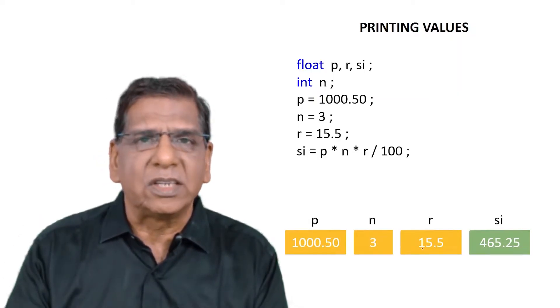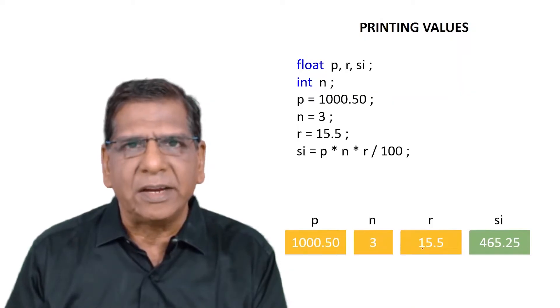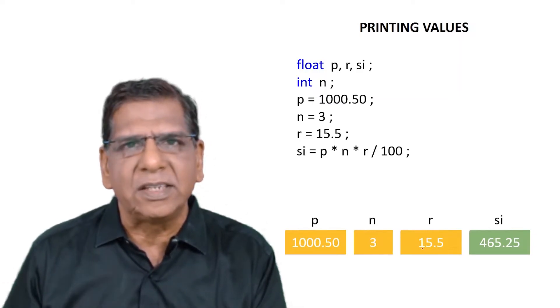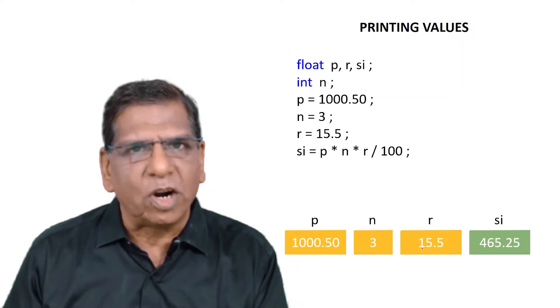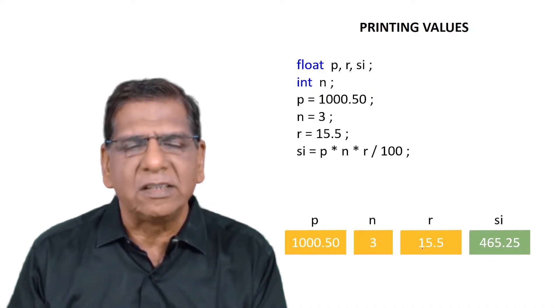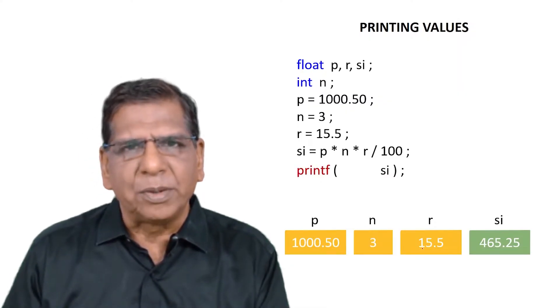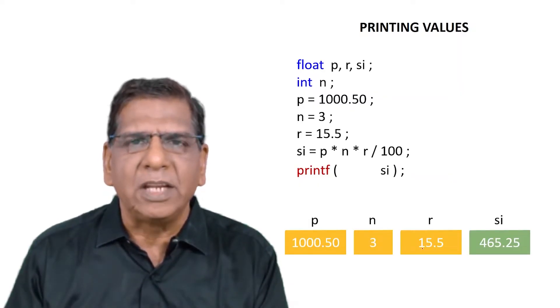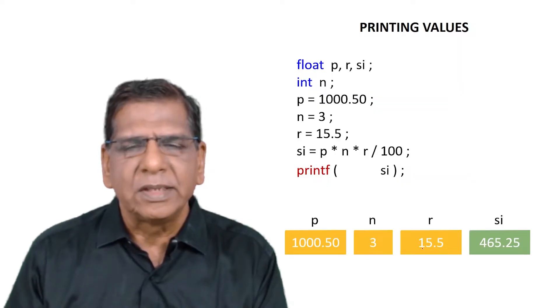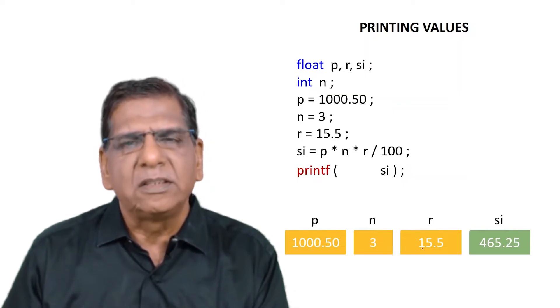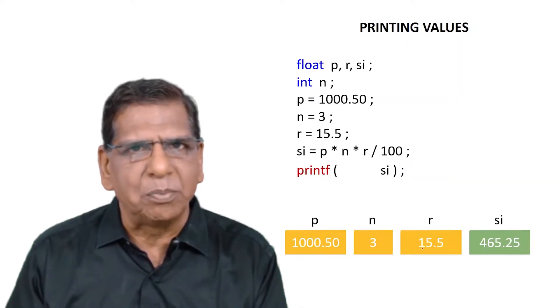But what is stored in this location is not visible to me with a naked eye. So I need some agent who will pick the value from this memory location and display it at a place where I can see it. That agent is a function called printf. And the place where it will display the value of SI is naturally the screen, that's your output device. The way to employ this agent printf is to say printf, then a pair of parenthesis, and the variable whose value we wish to print on the screen. In this case it is SI. Tomorrow if I want to see the value of P on the screen, we would naturally say printf P. Similarly printf N and printf R also can be employed. Right now we are of course interested only in printing the value of SI.